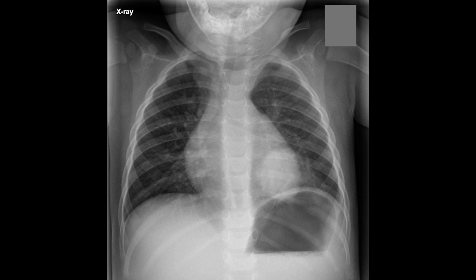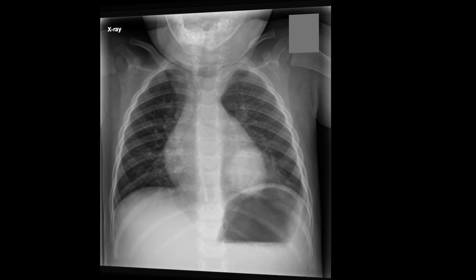The abnormality here is not subtle. There's a large rounded opacity medially at the base of the left hemithorax. There's no disruption of the heart border, placing this lesion posteriorly within the chest. The inferior margin of the mass is projected below the dome of the hemidiaphragm, suggesting that it's located behind the diaphragmatic apex. This rounded opacity is therefore in the medial basal segment of the left lower lobe.